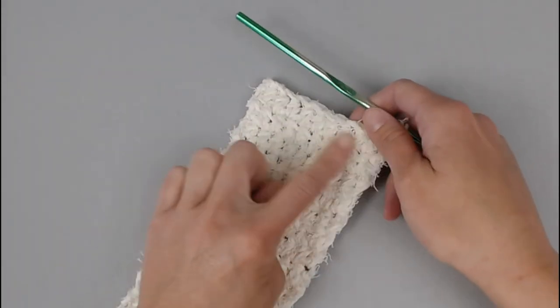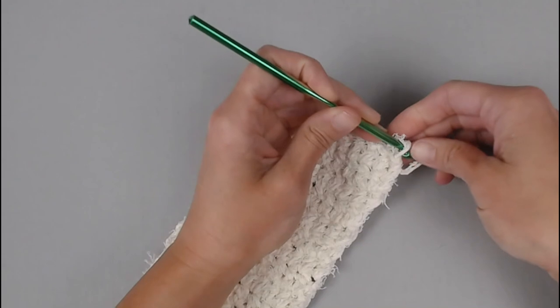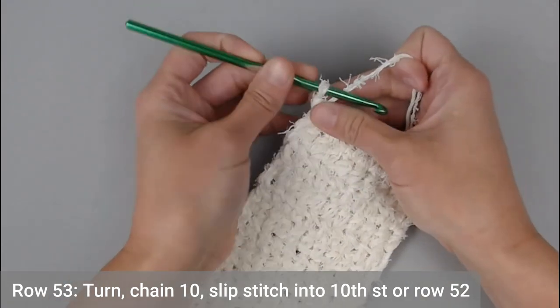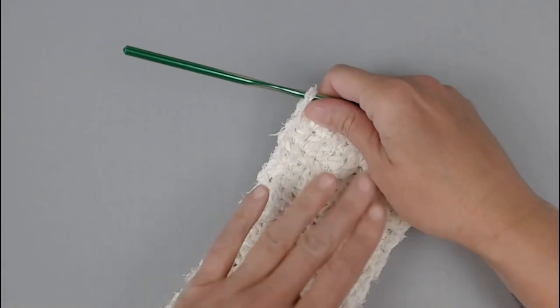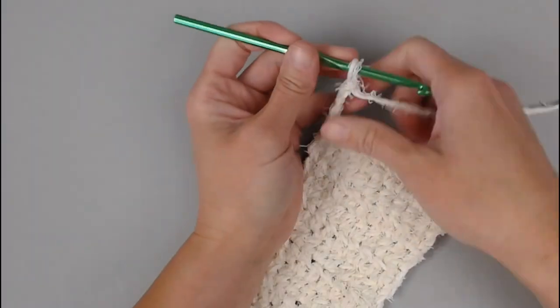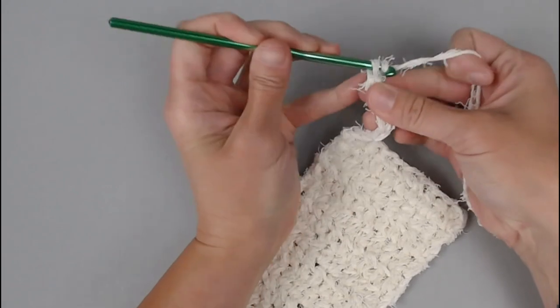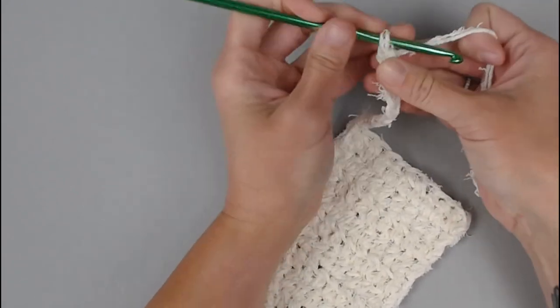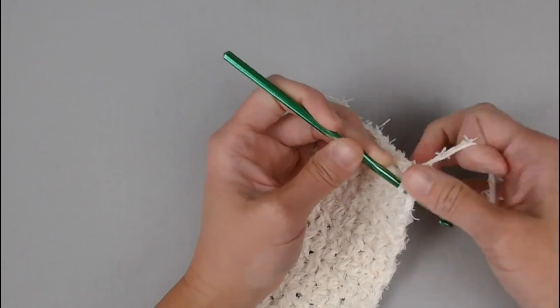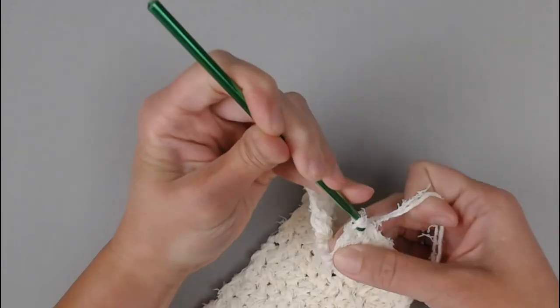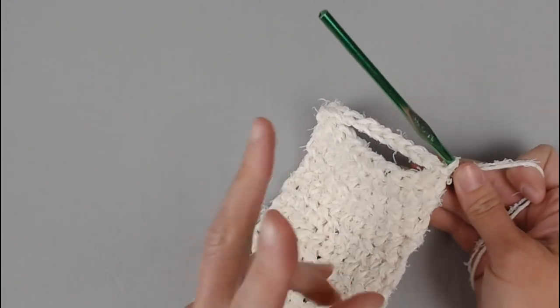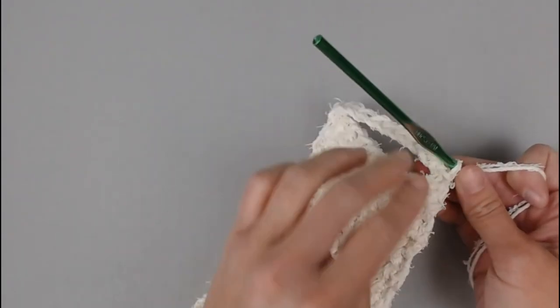We have made it to the very end of row 52. What you will do now is turn your work and then chain 10. We're starting to make the handle part of the spa back scrub. 1, 2, 3, 4, 5, 6, 7, 8, 9, 10. Then slip stitch into the 10th stitch of row 52. That was technically row 53.